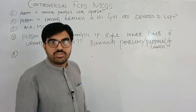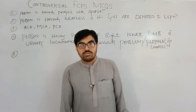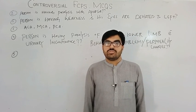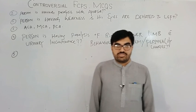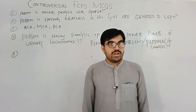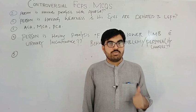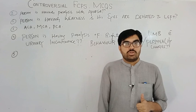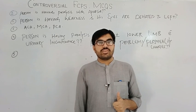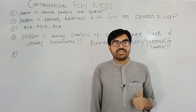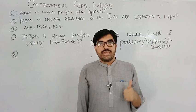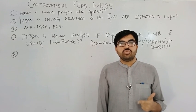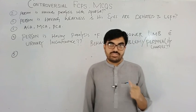The typical presentation of middle cerebral artery (MCA) stroke is contralateral weakness of the body, but more weakness in the upper limb compared to the lower limb. That is the key difference — in ACA stroke, lower limb paralysis is greater, whereas in MCA stroke, upper limb weakness predominates.